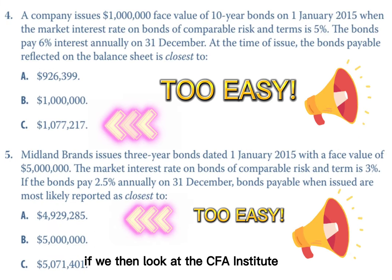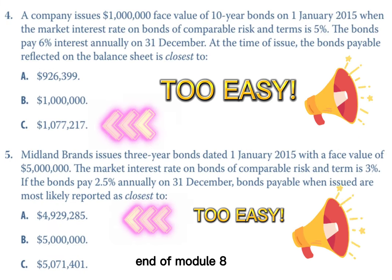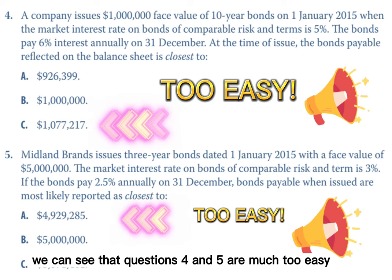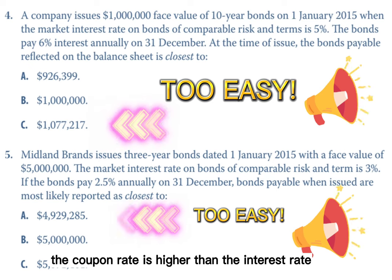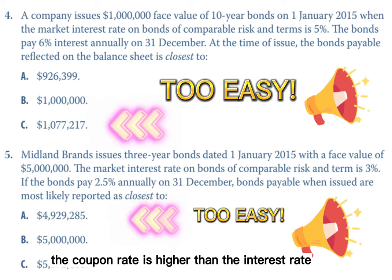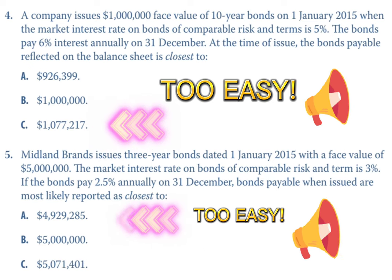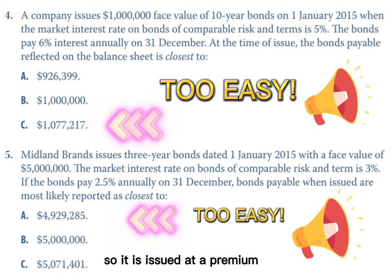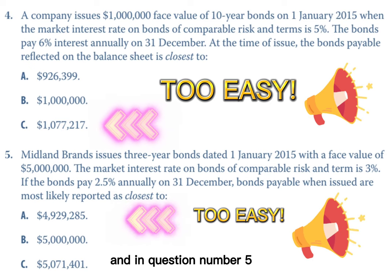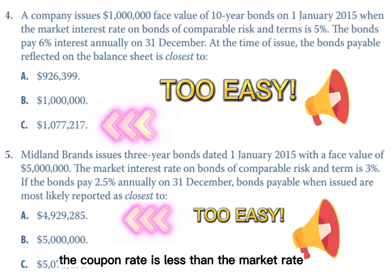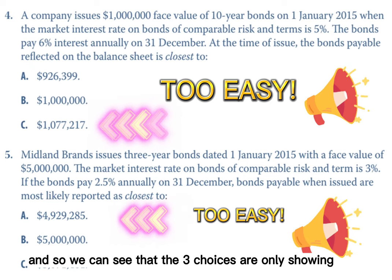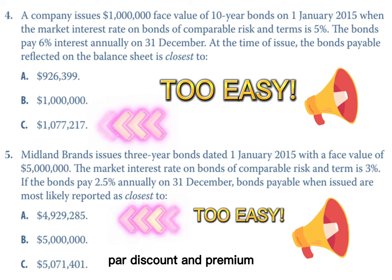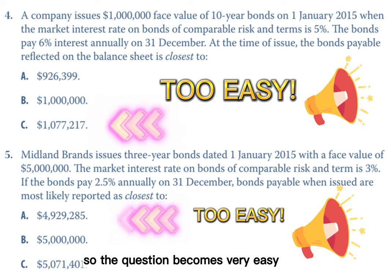Looking at the CFA Institute end-of-module eight practice problems, questions four and five are much too easy. In question four, the coupon rate is higher than the interest rate, so it is issued at a premium. In question five, the coupon rate is less than the market rate, so it's issued at a discount. The three answer choices only show par, discount, and premium, so the question becomes very easy.